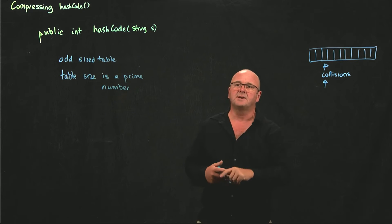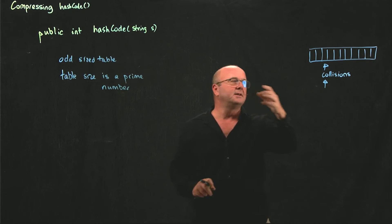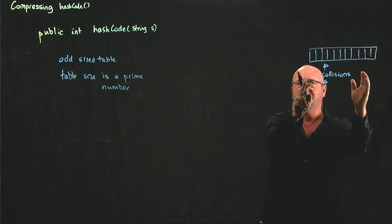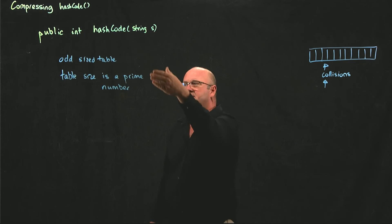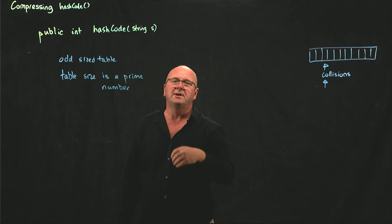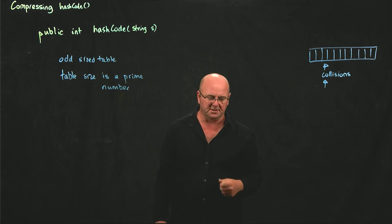The reason that we want to do this is we're going to take this int, we're going to use modulo to compress the int to the size of the table, and by changing the size of the table, we can affect the outcome of the modulo result.